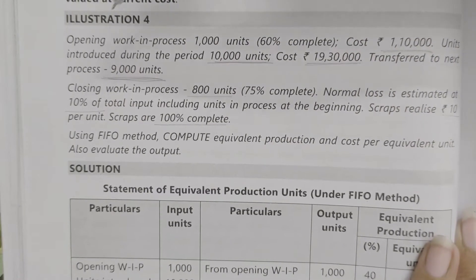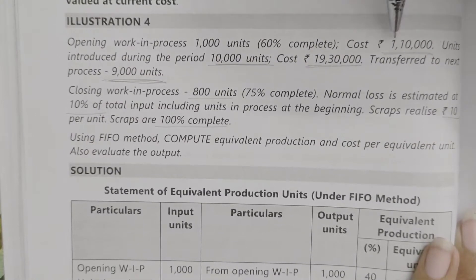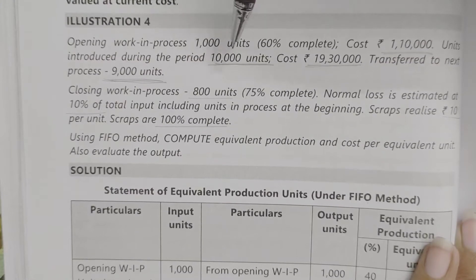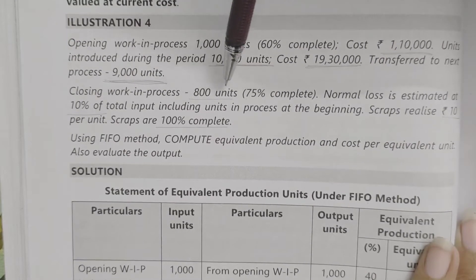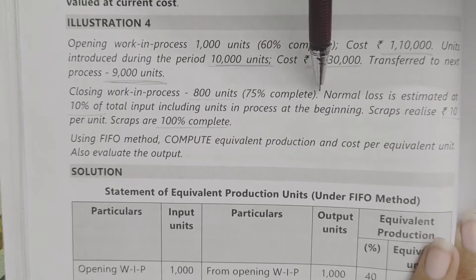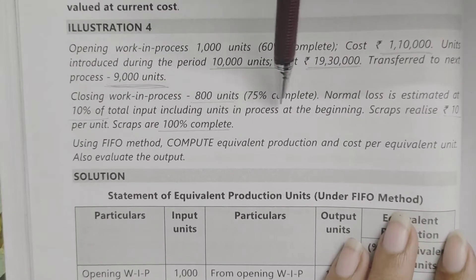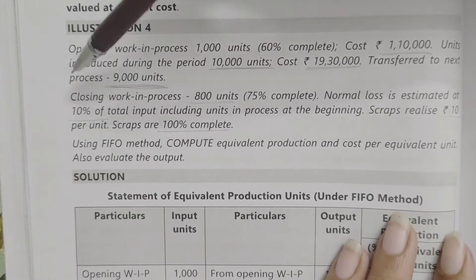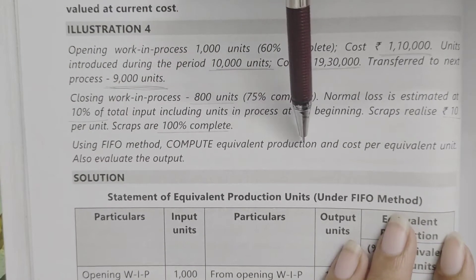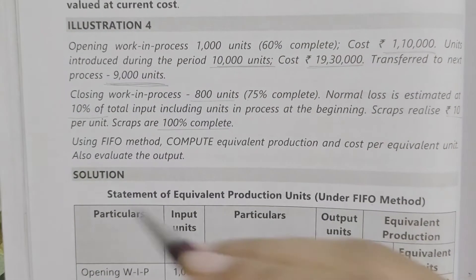Illustration: Opening WIP is 60% complete with 1,000 units. Units introduced during the period: 10,000 units. Units transferred to next process: 9,000 units. Closing WIP: 800 units. Normal losses estimated at 10% of total input including units in process at the beginning. Scraps realize 10 rupees per unit and are 100% complete. Using the FIFO method, compute equivalent production and cost per equivalent unit, and evaluate the output.